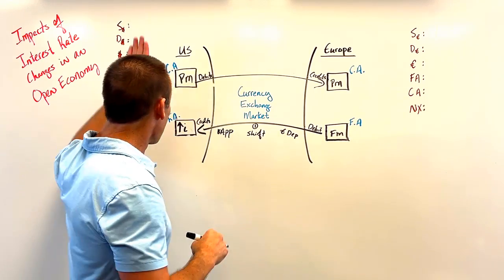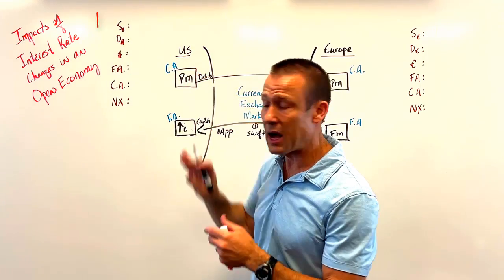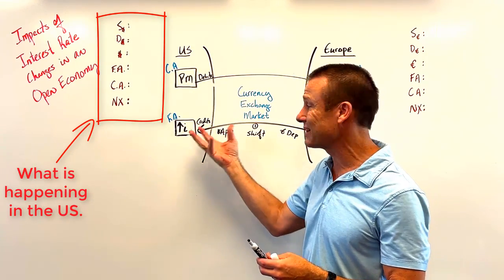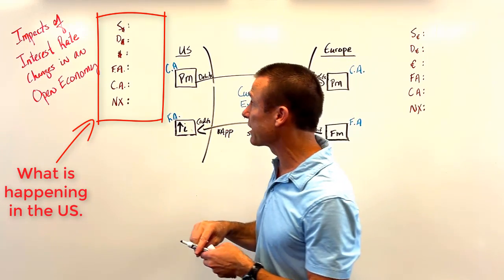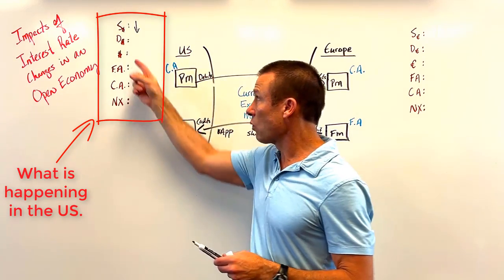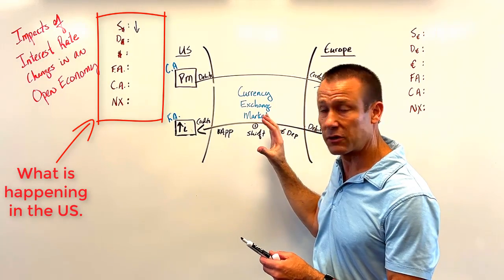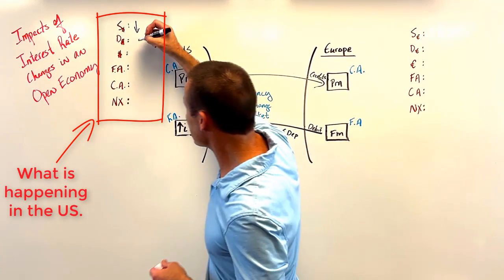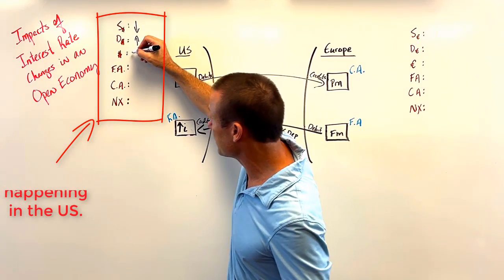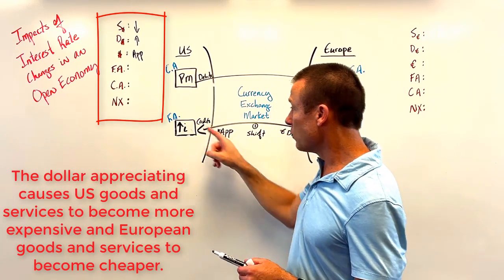Let's do an interesting pivot. For the supply of dollars: when the interest rate goes up, Americans are not going to supply their dollars abroad — they supply fewer dollars and keep more savings in their own financial market, so we see a decrease in the supply of dollars. For the demand for dollars: Europeans are bringing their euros in demanding the dollar, so we get an increase in demand. Both of these changes cause the dollar to appreciate.